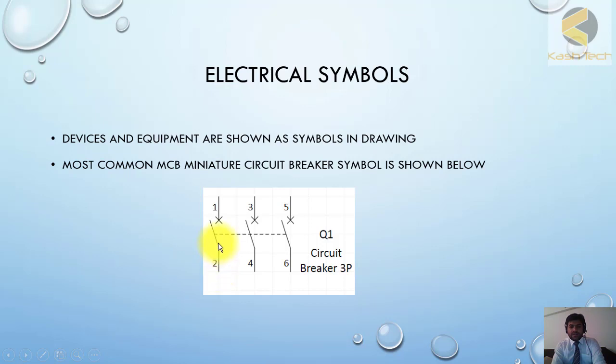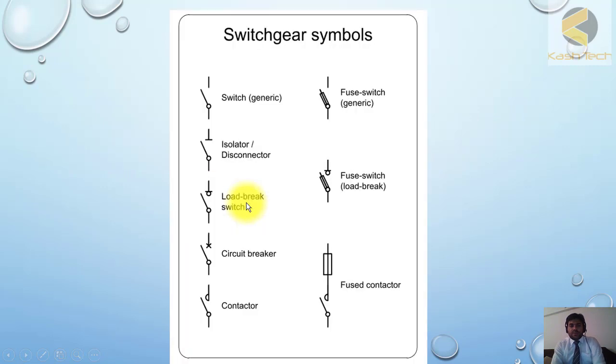There are three poles—we can say red, yellow, blue—and these are the terminal numbers: 1, 3, 5, 2, 4, 6. So this is the MCB symbol. Let's see some other symbols. You will find very small details can change the complete meaning.